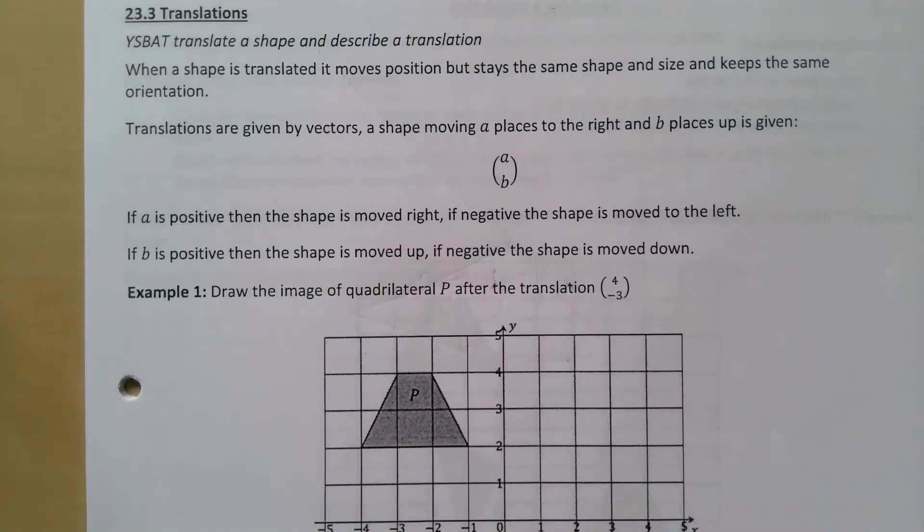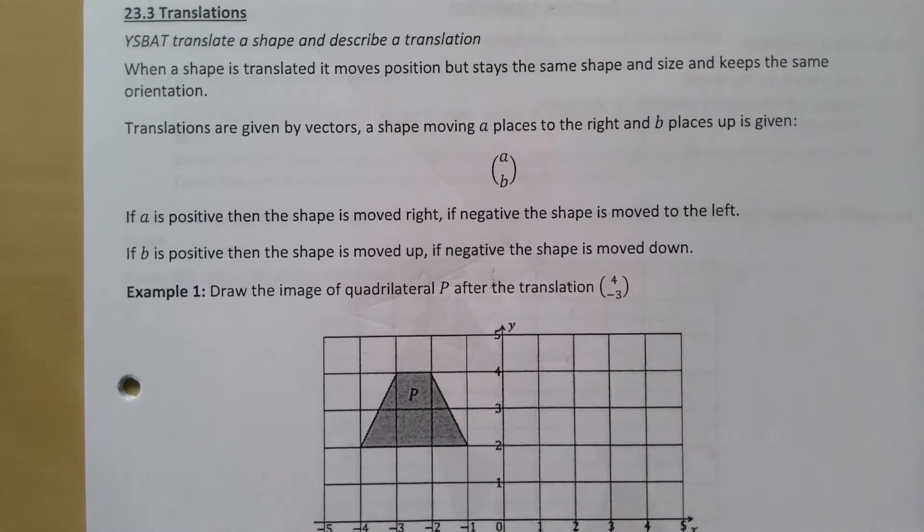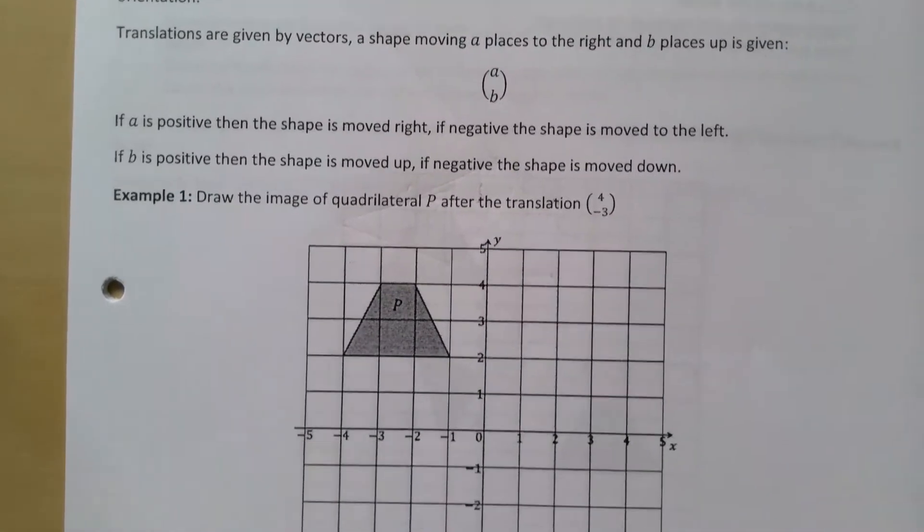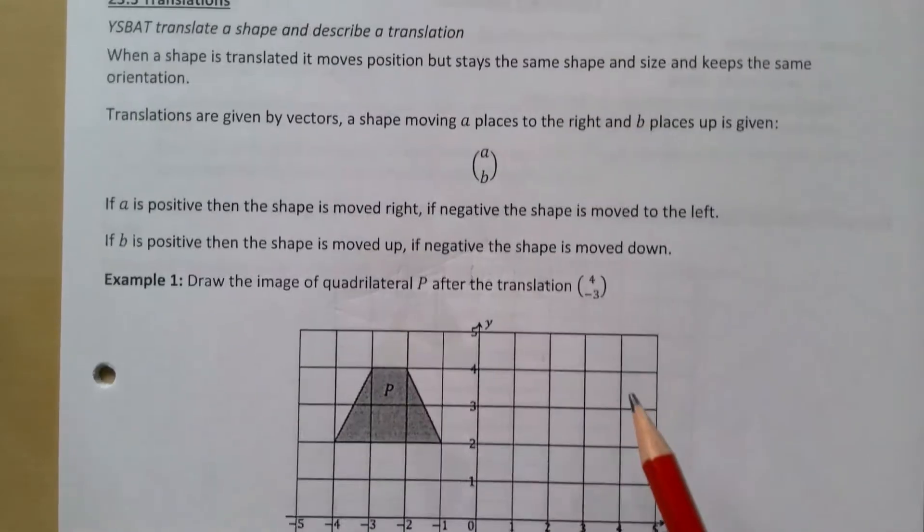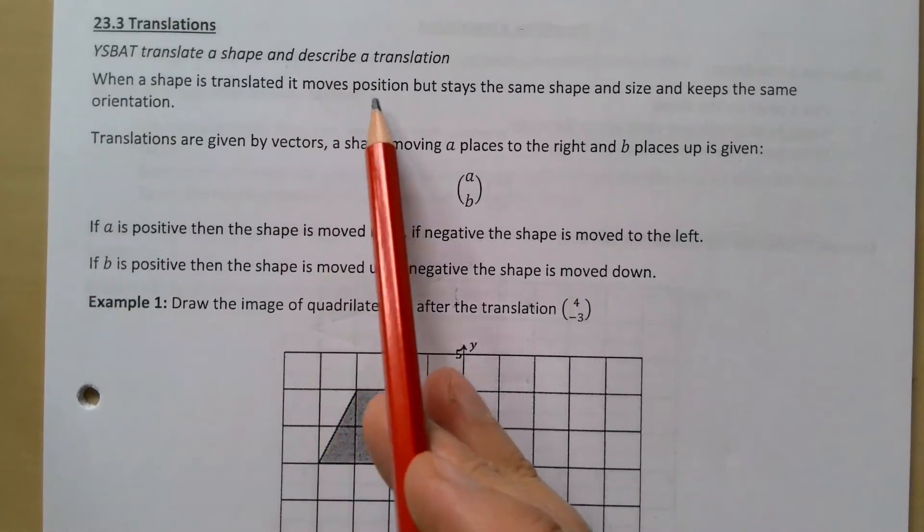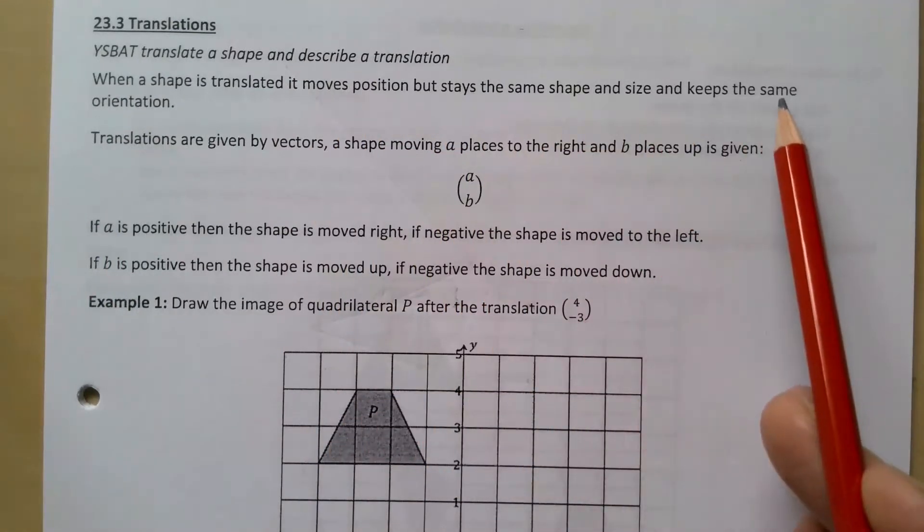This is our third GCSE math video on transformations and we're now dealing with translations. Translations is a very straightforward one - it sounds complicated but it's simply moving a shape from one place to another, across some or down some, across some or up some. When a shape is translated it moves a position but stays the same shape and size and keeps the same orientation.